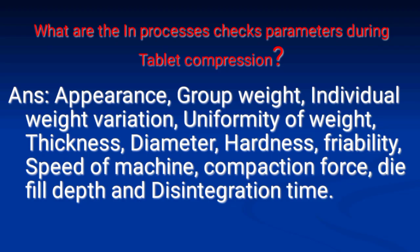Next: What are the in-process check parameters during tablet compression? Answer: Appearance, group weight, individual weight variation, uniformity of weight, thickness, diameter, hardness, friability, speed of machine, compression force, die fill depth, and disintegration time.